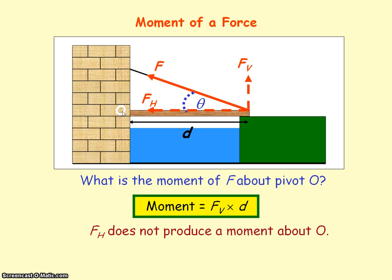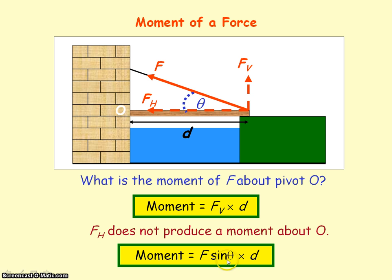So there's no moment. Whenever the line of action of a force passes through the pivot point, it will produce no moment. Resolving force F to find the vertical component: the vertical component is opposite to the angle theta, so we use the sine term. The vertical component equals F sine theta. So the moment of the force about the pivot point will be F sine theta multiplied by the perpendicular distance D.